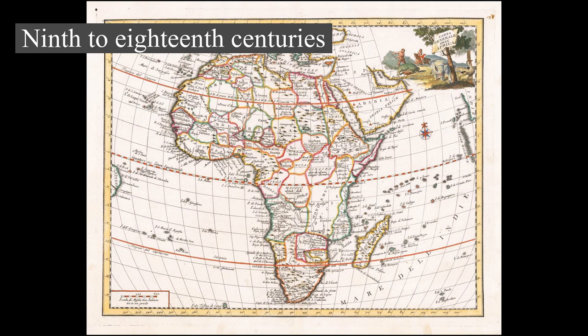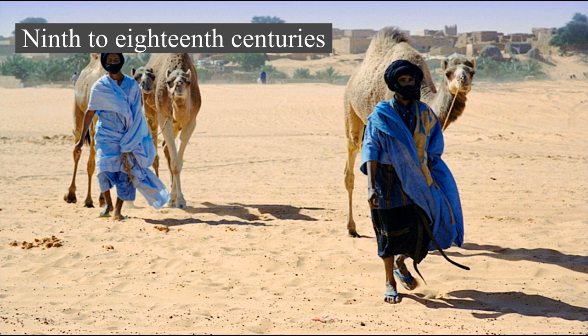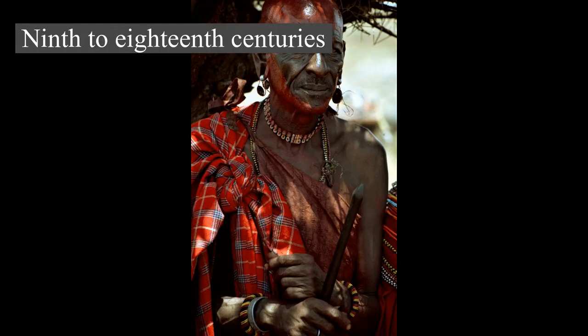The Almoravids were a Berber dynasty from the Sahara that spread over a wide area of northwestern Africa and the Iberian Peninsula during the 11th century. The Banu Hilal and Banu Makil were a collection of Arab Bedouin tribes from the Arabian Peninsula, who migrated westwards via Egypt between the 11th and 13th centuries. Their migration resulted in the fusion of the Arabs and Berbers, where the locals were Arabized, and Arab culture absorbed elements of the local culture under the unifying framework of Islam.